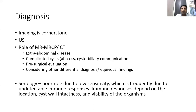The diagnosis of cystic disease is based on imaging, which is the cornerstone. Ultrasound abdomen will pick up pathognomonic signs. There is also a role for CT and MRI, especially when there is suspicion of extra-abdominal disease, in complicated situations like an abscess, when suspecting a cystobiliary communication, for pre-surgical evaluation, or when other differential diagnoses are considered and ultrasound findings are equivocal.